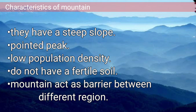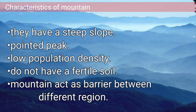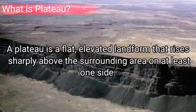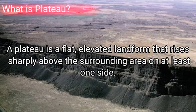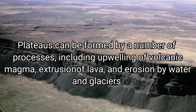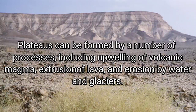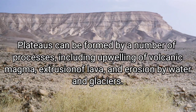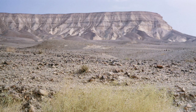Next is plateau. A plateau is a flat elevated landform that rises sharply above the surrounding area on at least one side. It is also termed as tableland because of its flat, extensive top. Plateaus can be formed by different processes, both endogenetic and exogenetic. Upwelling of volcanic magma, intrusion of lava, and erosion by water and glaciers are a few causes for plateau formation.